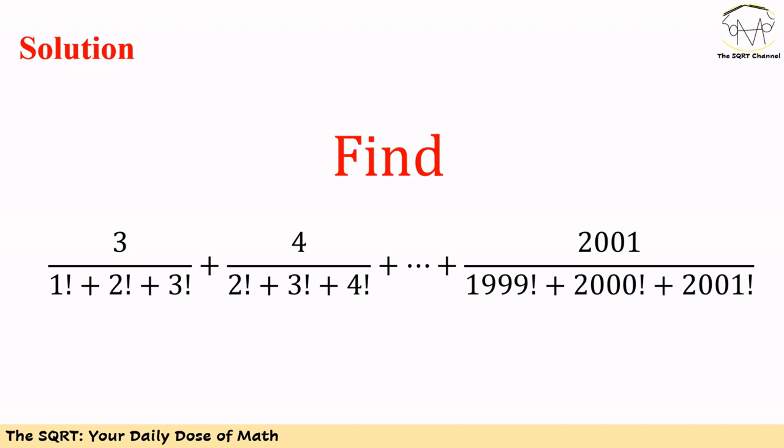For k=1, the denominator is 1 factorial plus 2 factorial plus 3 factorial. For the second term when k=2, we have 4 for the numerator and 2 factorial plus 3 factorial plus 4 factorial for the denominator. We need to do this up to k=1999, where the numerator is 2001 and the denominator is 1999 factorial plus 2000 factorial plus 2001 factorial.